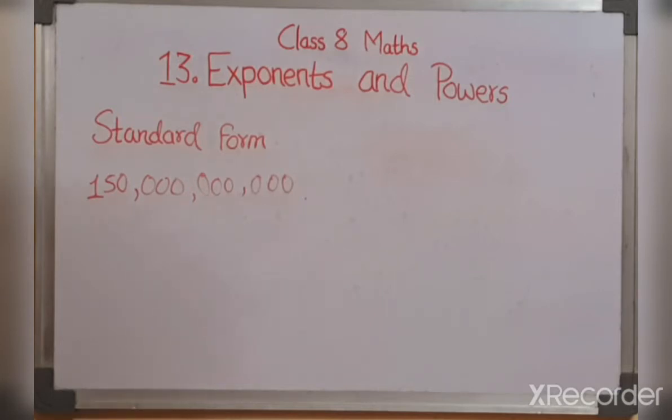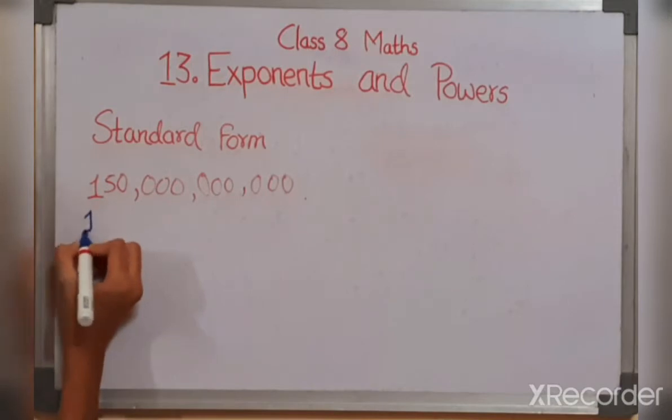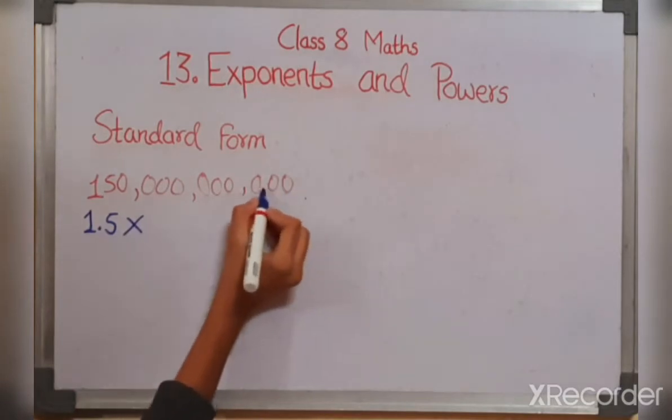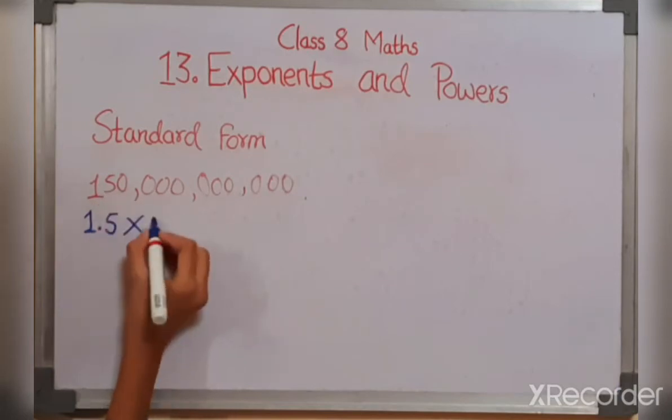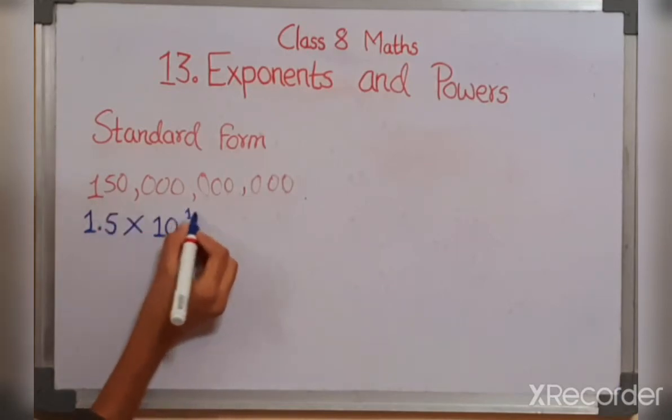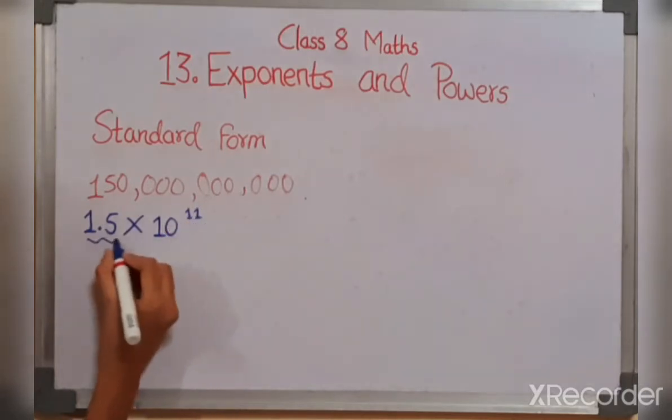So the standard form of this is going to be 1.5. So how many places we have taken back here? 1, 2, 3, 4, 5, 6, 7, 8, 9, 10 and 11. So 10 raised to the power 11. So this is the standard form of this number.